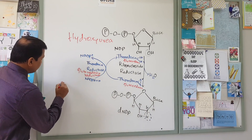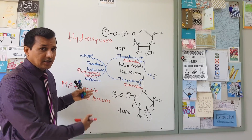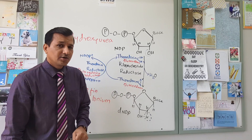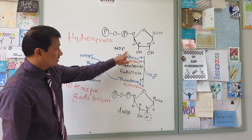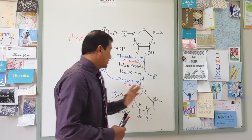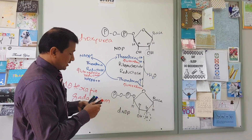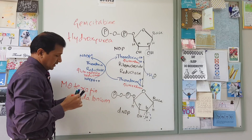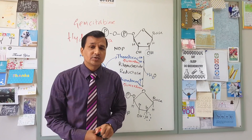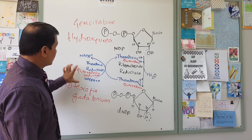Another drug is motaxafin gadolinium, which inhibits both thioredoxin reductase and ribonucleotide reductase. By inhibiting thioredoxin reductase it decreases availability of reduced thioredoxin, and it also directly inhibits ribonucleotide reductase. Overall it decreases conversion of NDP to dNDP, affecting the replication process. Motaxafin gadolinium is used in treatment of brain tumors. Gemcitabine, a nucleoside analog, irreversibly inhibits ribonucleotide reductase and also decreases conversion of NDP to dNDP. So hydroxyurea, motaxafin gadolinium, and gemcitabine are drugs that act on ribonucleotide reductase.